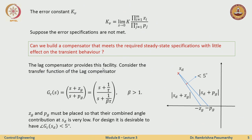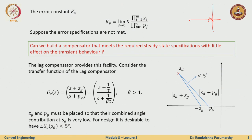The lag compensator provides this facility. For the ideal integral compensator, we would place a pole at the origin to eliminate steady state error completely. But an ideal integrator cannot be realized, so instead we place it slightly to the left of the origin. If we just add a pole slightly to the left, say at minus 0.05, it may meet steady state conditions, but it will contribute a certain angle to the plant, potentially violating the angle condition.